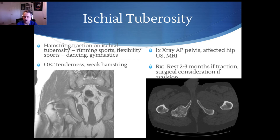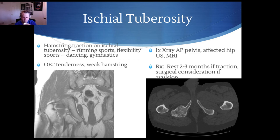Because it's a proximal large muscle injury, we're looking at resting for two to three months. Avulsion fractures in this area — this is probably the one area in Canada where we will aim for surgical repair, especially if there's greater than half to two centimeters of displacement.